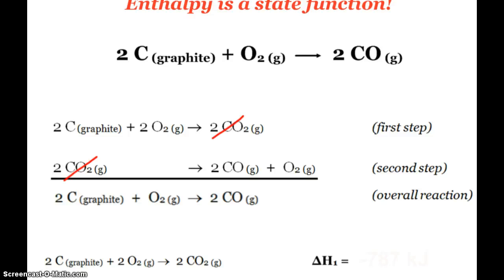we'll say carbon dioxide breaks down into carbon monoxide and oxygen. And so when you add these two equations together, the carbon dioxides cancel out. And you've got the two carbon graphite plus O2.